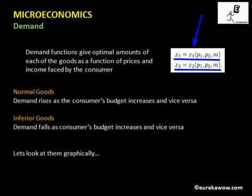Before we move on, we will make certain definitions. Normal goods are those goods for which the demand rises as the consumer's budget increases — if income increases from M1 to M2, the quantity demanded of the normal good will increase. On the other hand, inferior goods are those goods for which the demand falls as the consumer's budget increases — if income increases from M1 to M2, the quantity demanded of the inferior good falls.